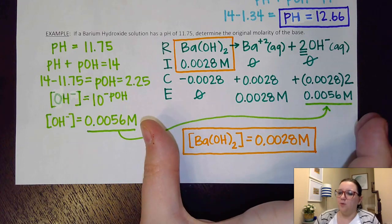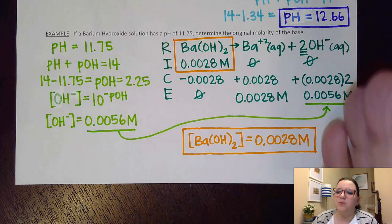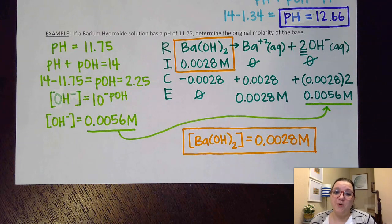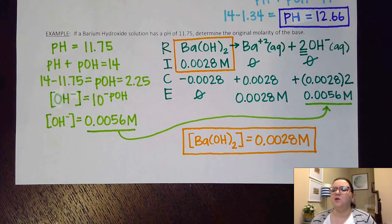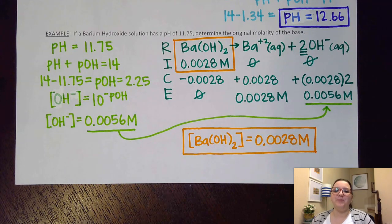This is a little different from a normal equilibrium RICE table because it's not equilibrium, but I can still use that same setup to figure out what's going on. I hope we're feeling good about calculating with pH, pOH, H⁺ concentration, and OH⁻ concentration using all the good formulas. If you have any questions or need any help, please feel free to email me. Bye, guys.